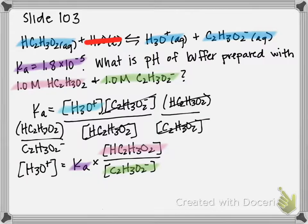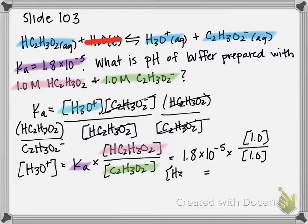So we plug everything in: 1.8 times 10 to the negative 5, times 1, over 1. So literally, H3O plus is 1.8 times 10 to the negative 5, because 1 divided by 1 is 1.